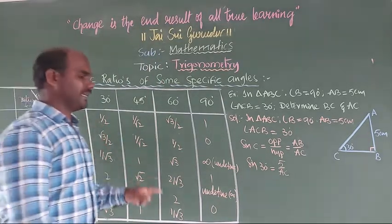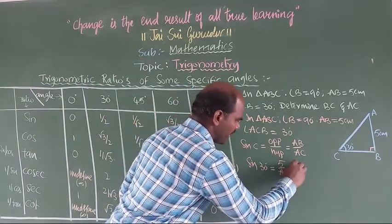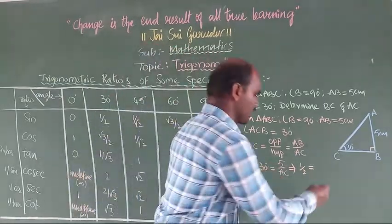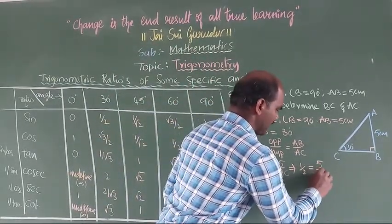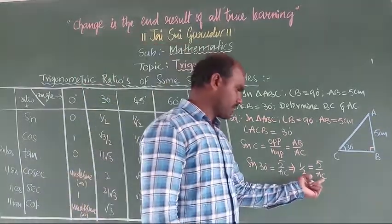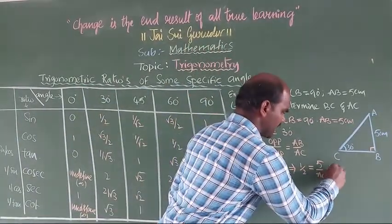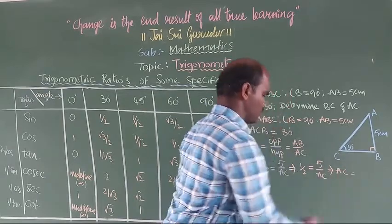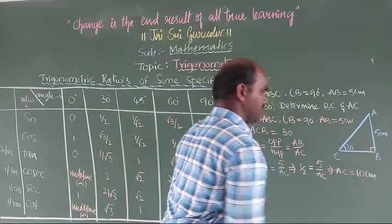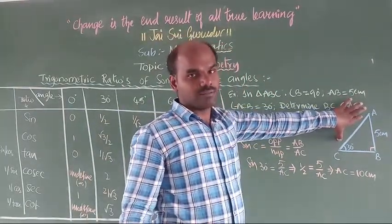So applying sin 30 = 1/2, we get 1 by 2 is equal to 5 by AC. By taking the cross multiplication, AC is equal to 5 multiplied by 2, which gives AC equal to 10 centimeters.